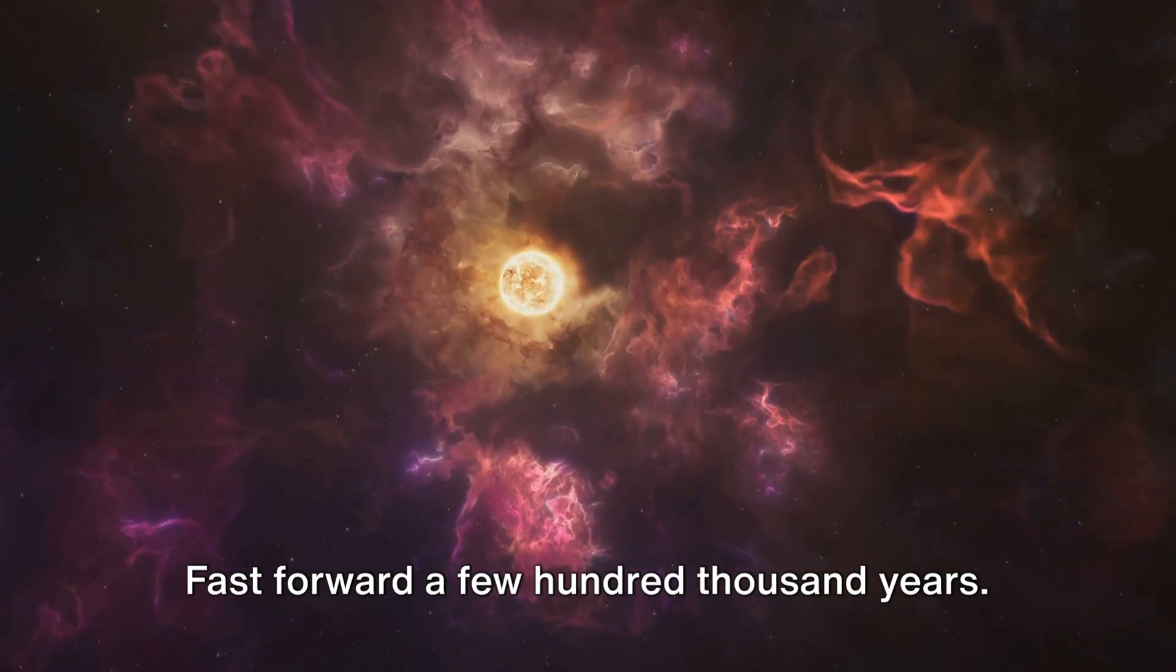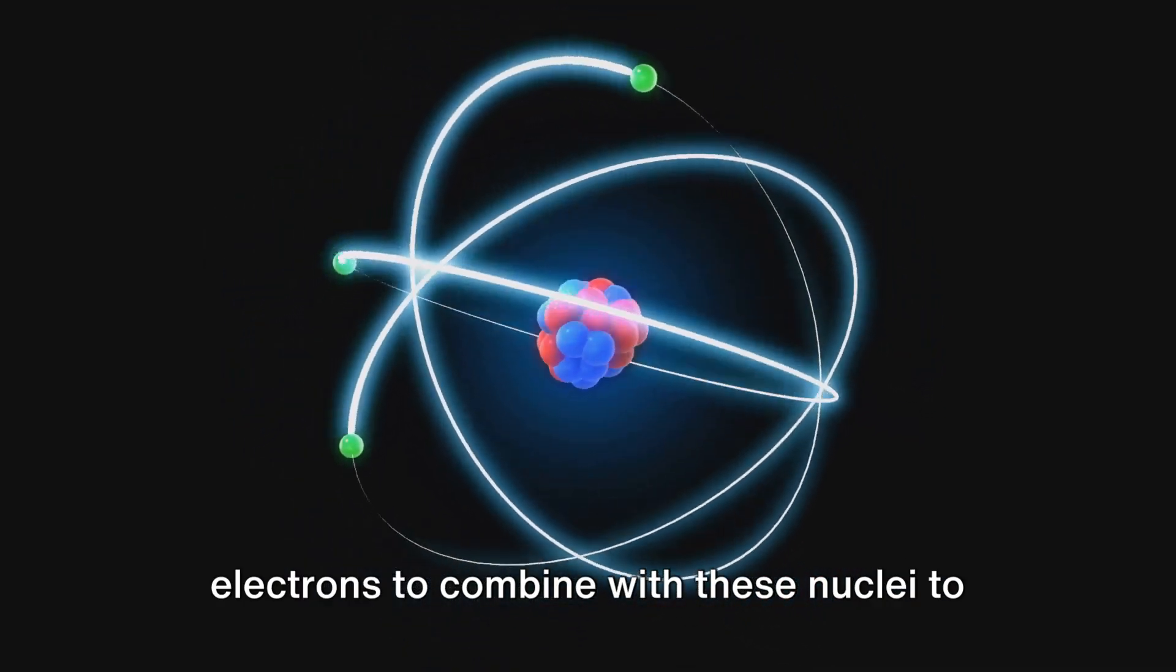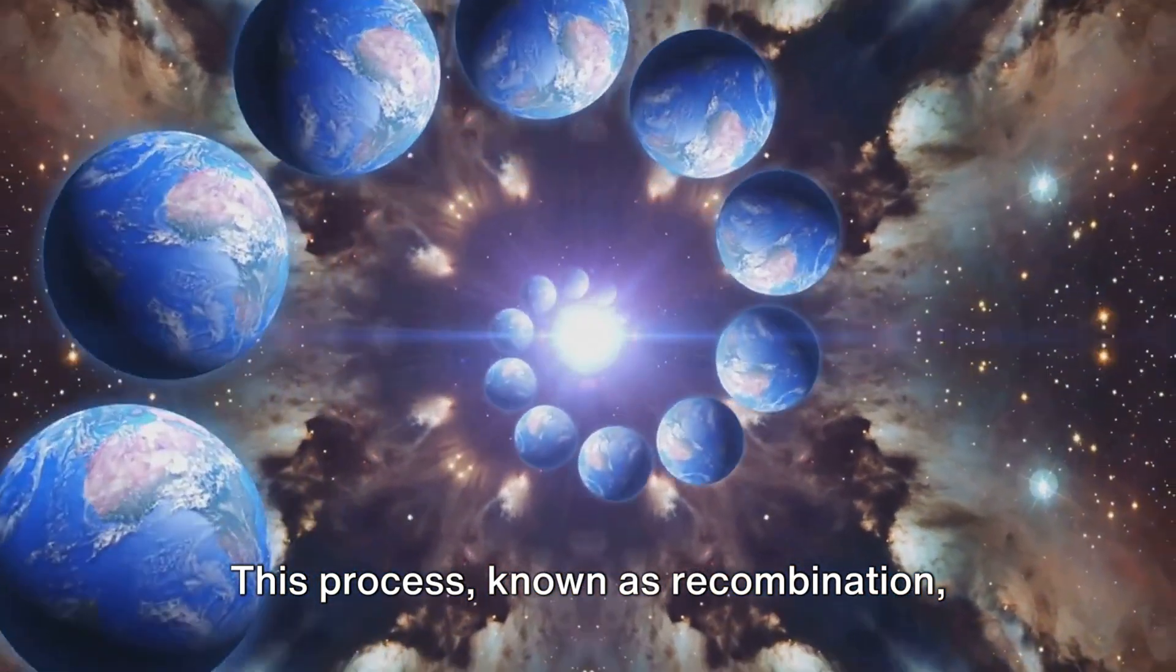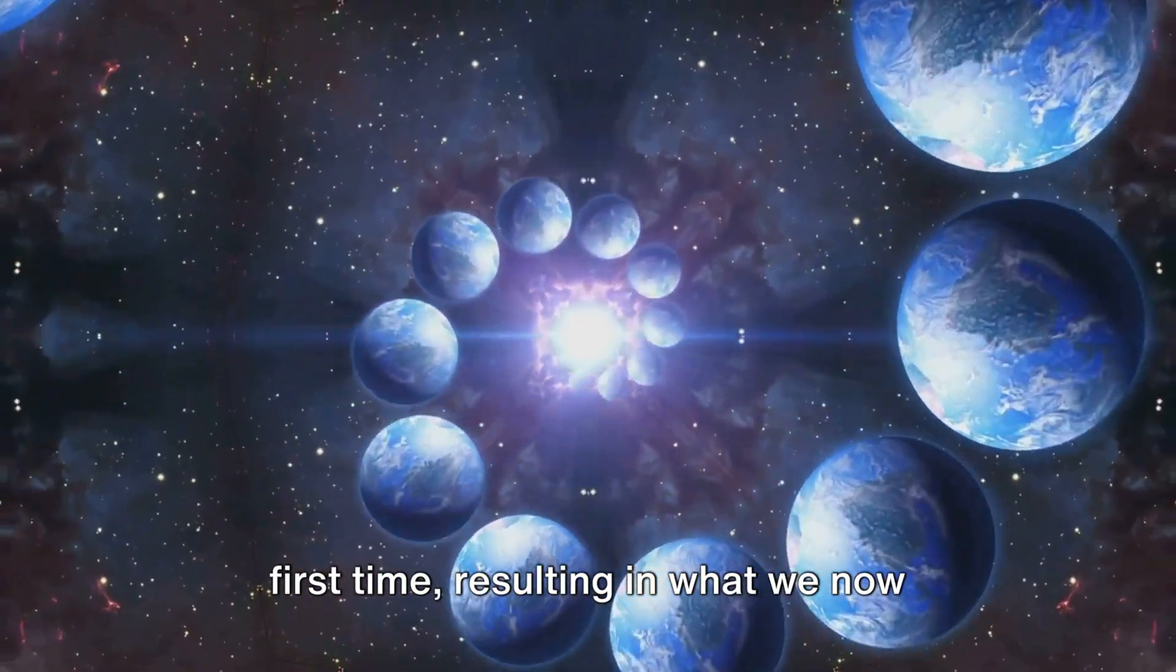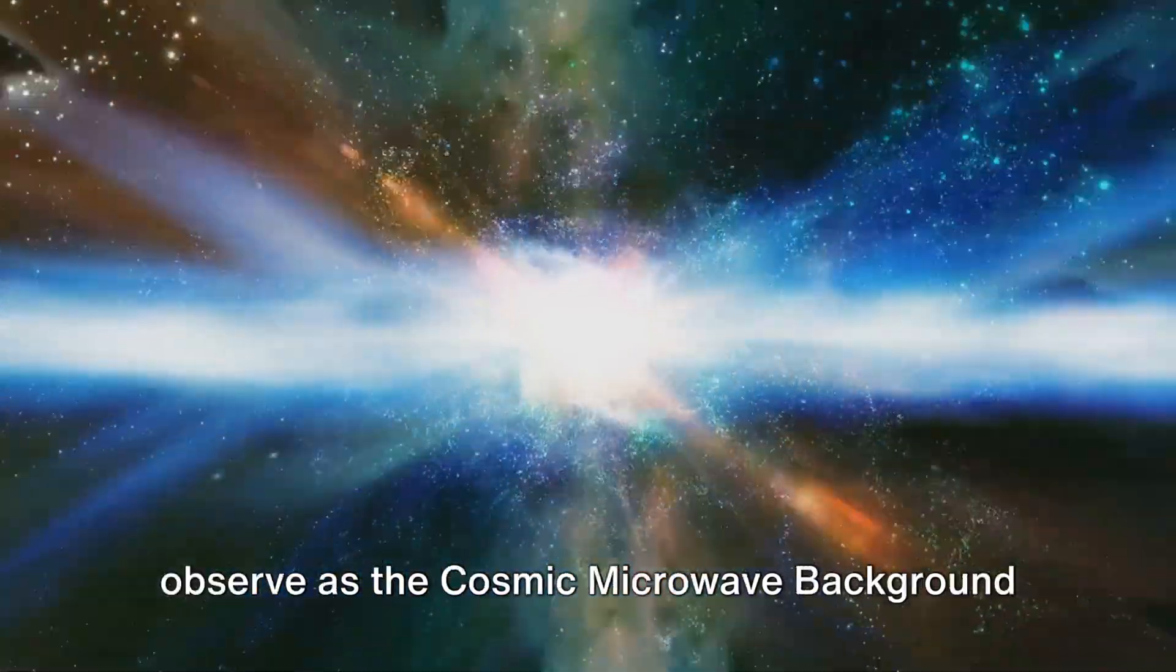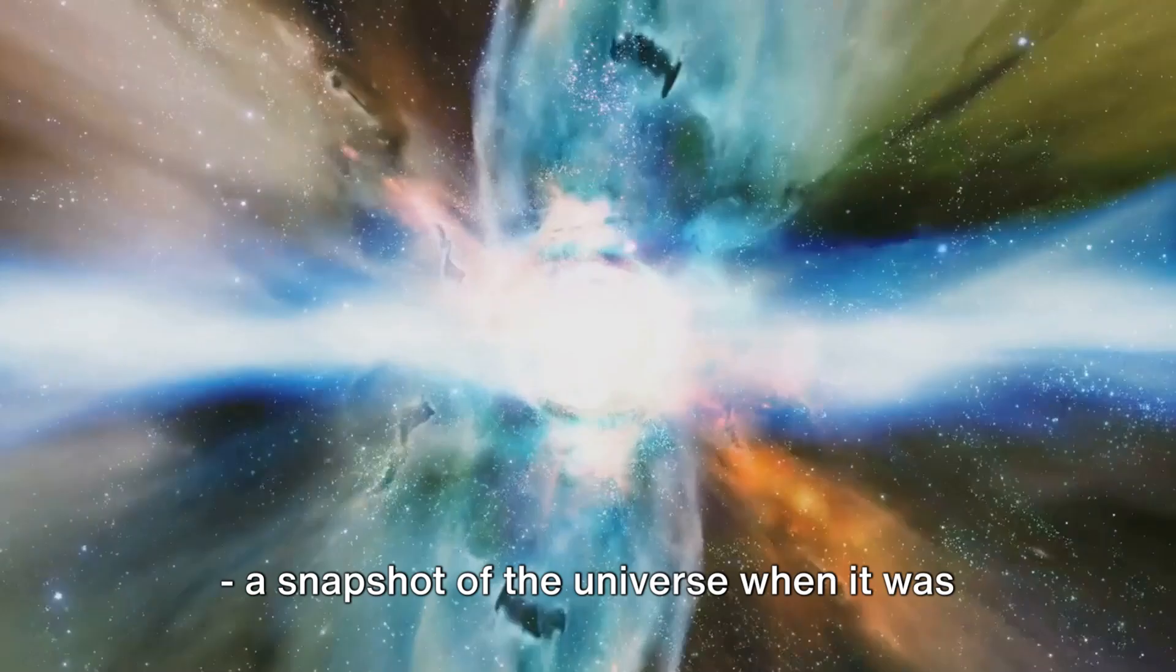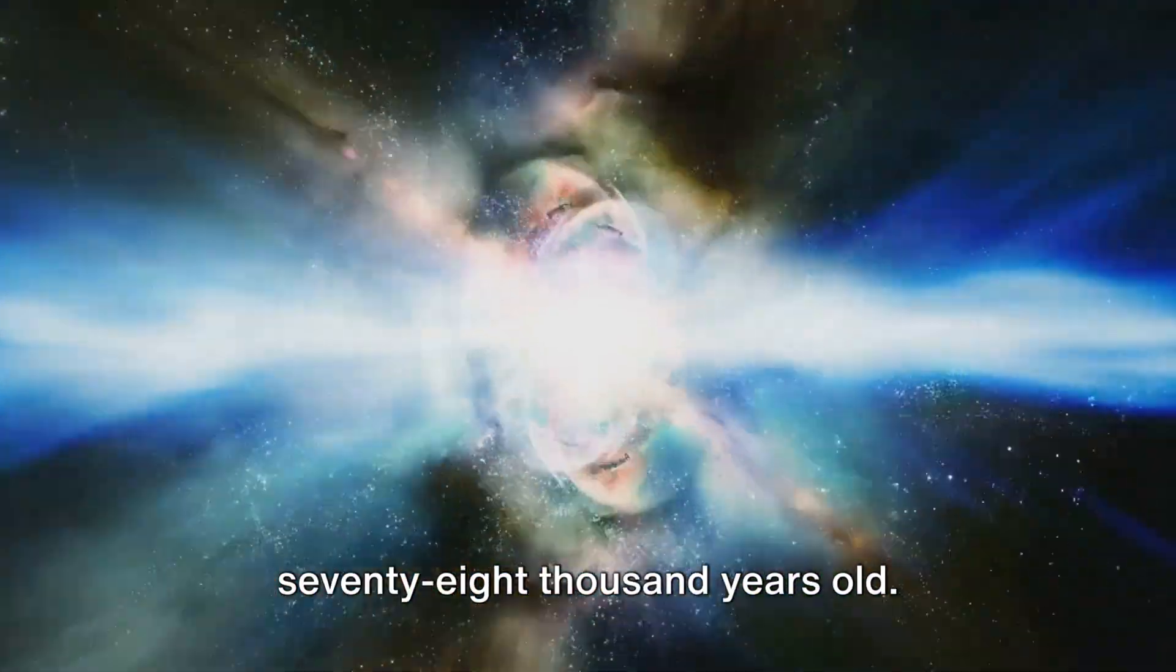Fast forward a few hundred thousand years. The universe has cooled enough for electrons to combine with these nuclei to form neutral atoms. This process, known as recombination, allowed photons to travel freely for the first time, resulting in what we now observe as the cosmic microwave background. A snapshot of the universe when it was just a baby, about 378,000 years old.